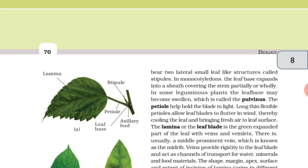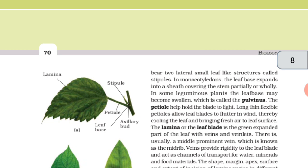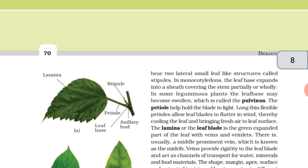The petiole helps hold the blade to light. Long, thin, flexible petioles allow leaf blades to flutter in wind, thereby cooling the leaf and bringing fresh air to leaf surface.